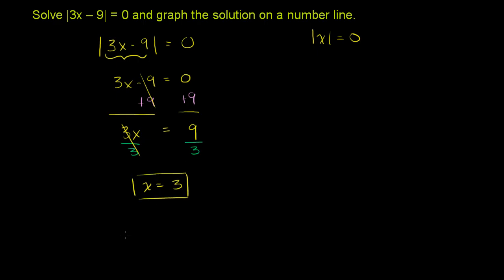And that's our solution. Now let's make sure that this actually works. Let's substitute it back into our original equation. So we have the absolute value of 3 times 3 minus 9 has got to be equal to 0. So what's this going to be equal to? 3 times 3 is 9. So it's the absolute value of 9 minus 9, which is the absolute value of 0, which is indeed 0. So it does indeed equal 0. And we are done.